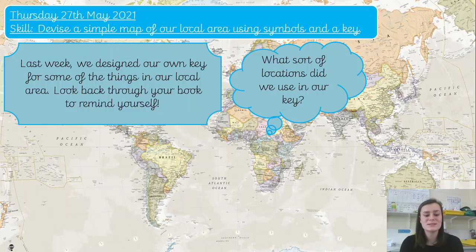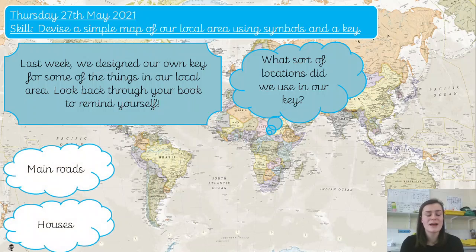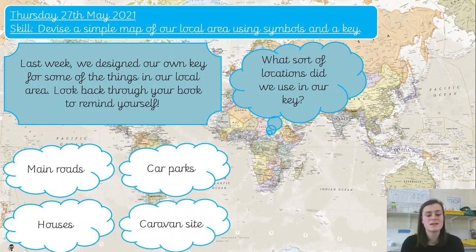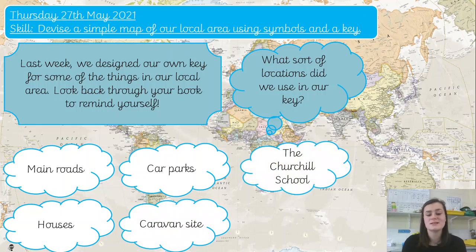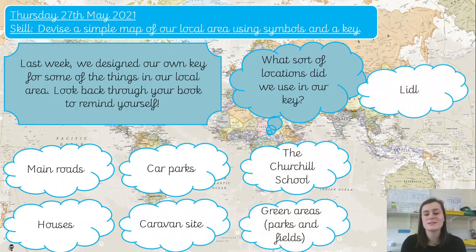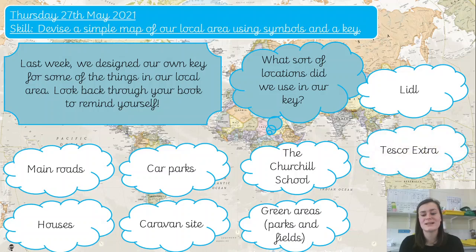So of course it was things like main roads, houses, car parks, the caravan site, the Churchill School, green areas, Lidl and Tesco Extra.